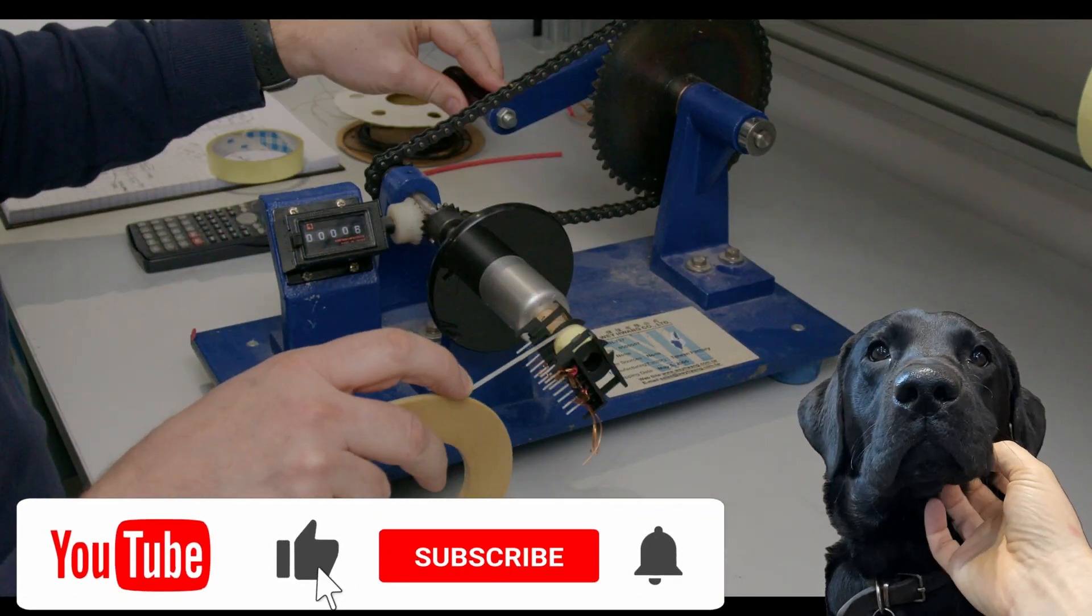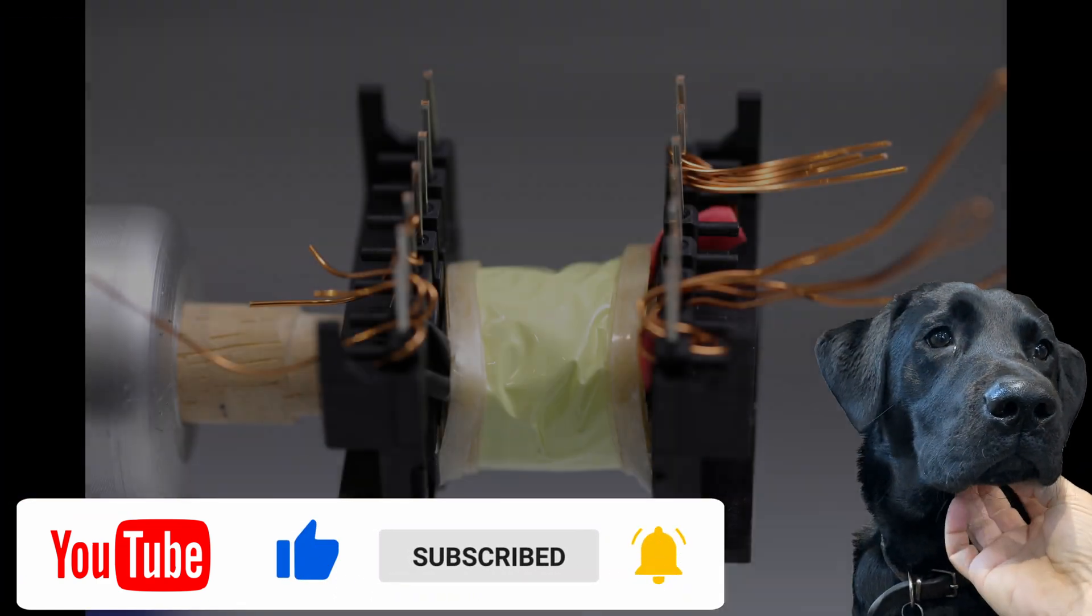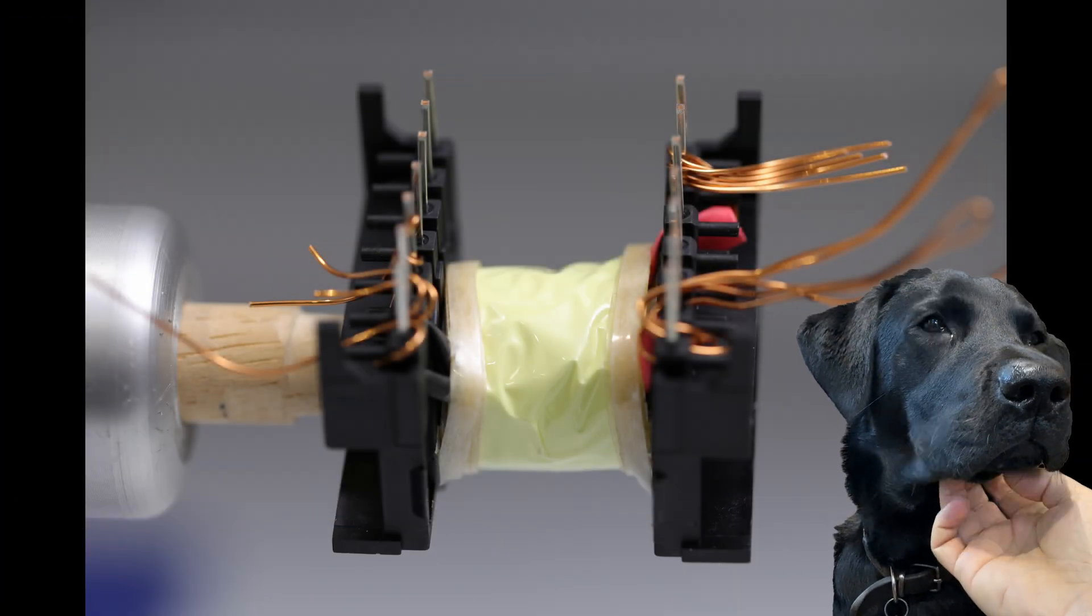Ok stick with me here. After a break for a cup of tea and a stroke of Jasper, we now add three layers of insulation tape and the margin tape at each side of the bobbin.